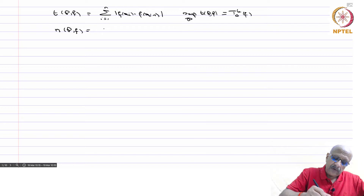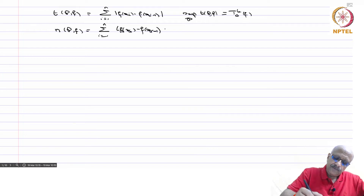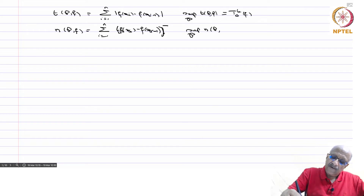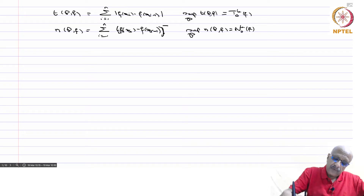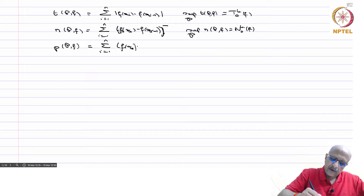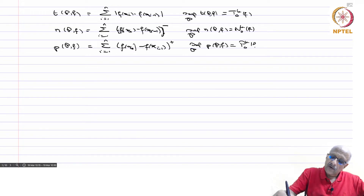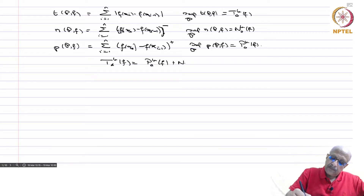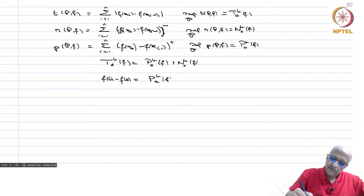We had N(P,f) = sigma i=1 to n of [f(x_i) - f(x_{i-1})]^-, and the supremum over all partitions of N(P,f) was N(a,b,f). Similarly, P(P,f) = sigma i=1 to n of [f(x_i) - f(x_{i-1})]^+, and the supremum was P(a,b,f). We also proved that T(a,b,f) = P(a,b,f) + N(a,b,f).